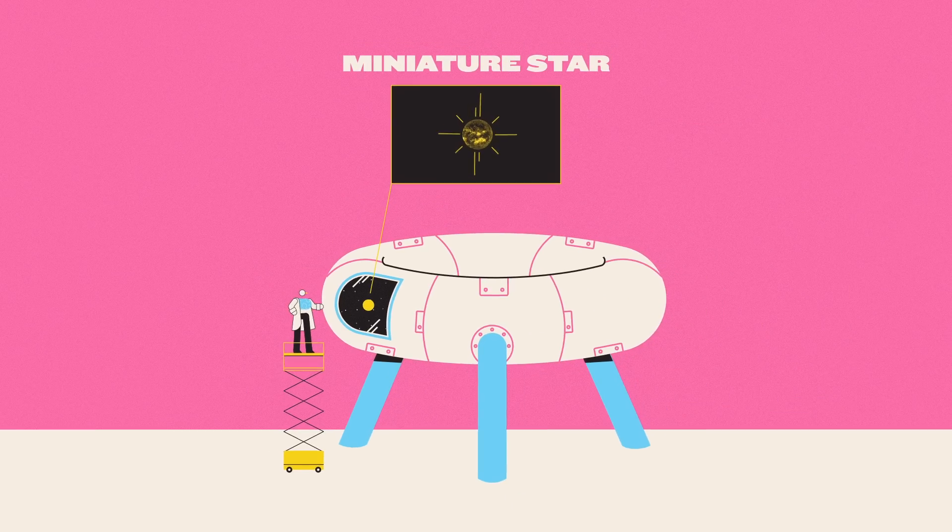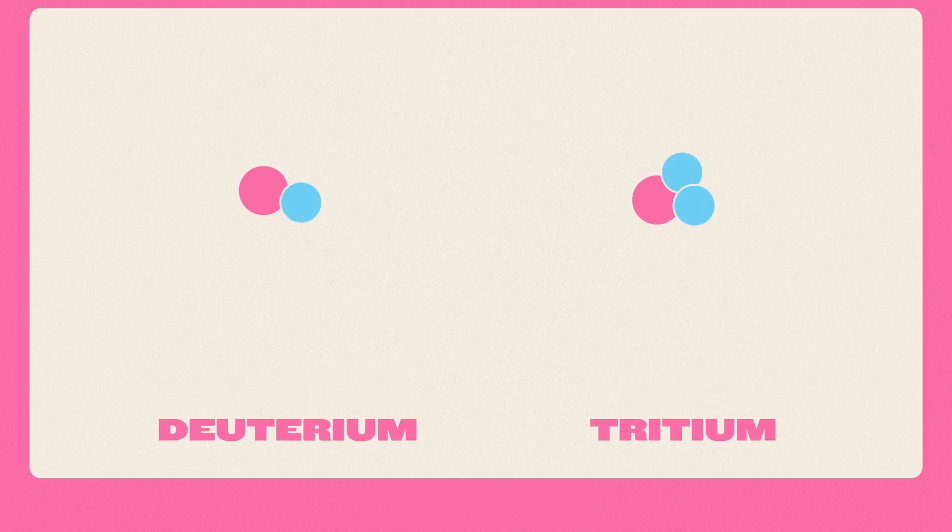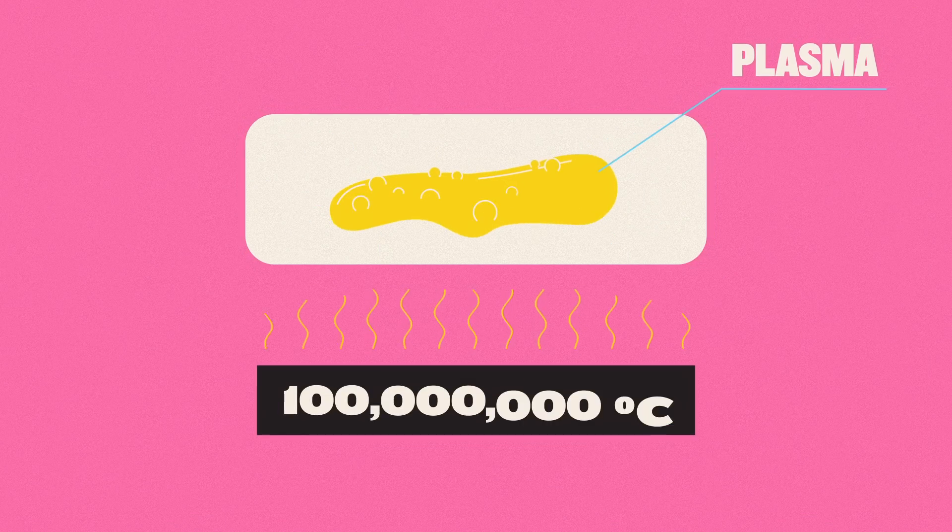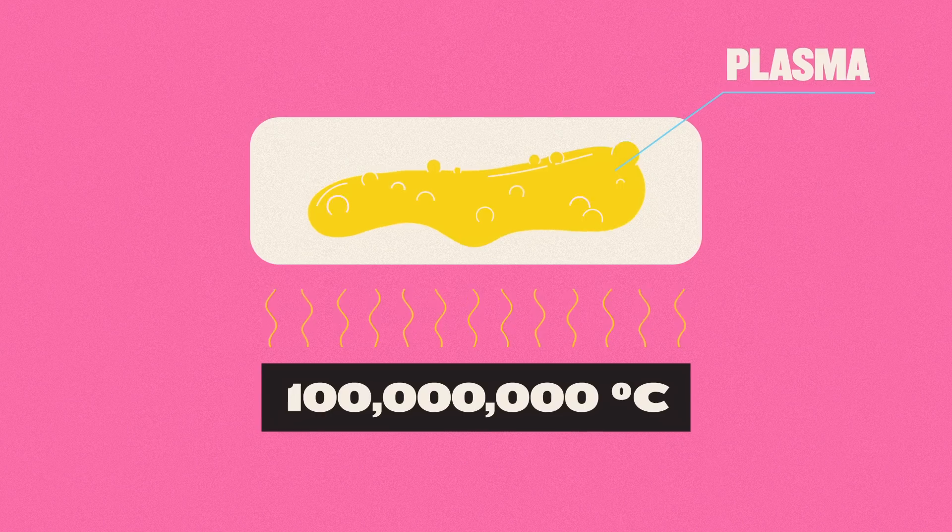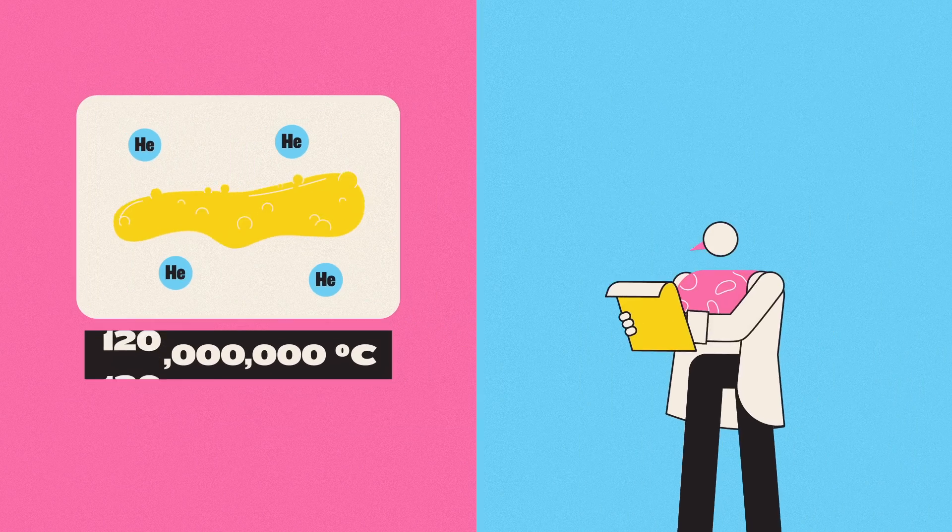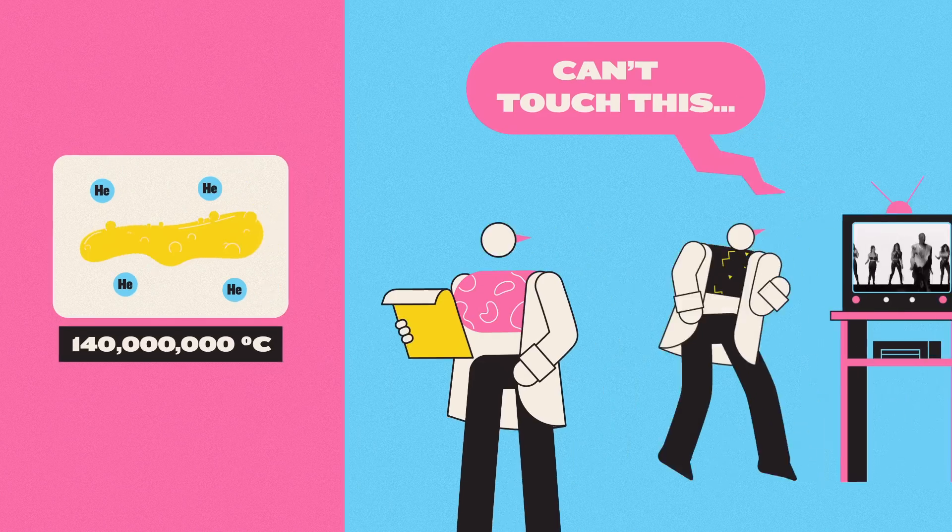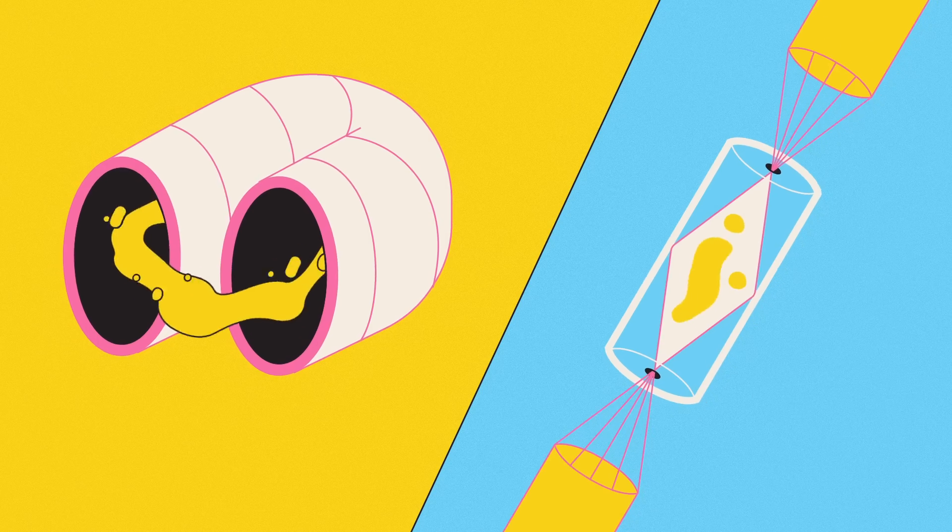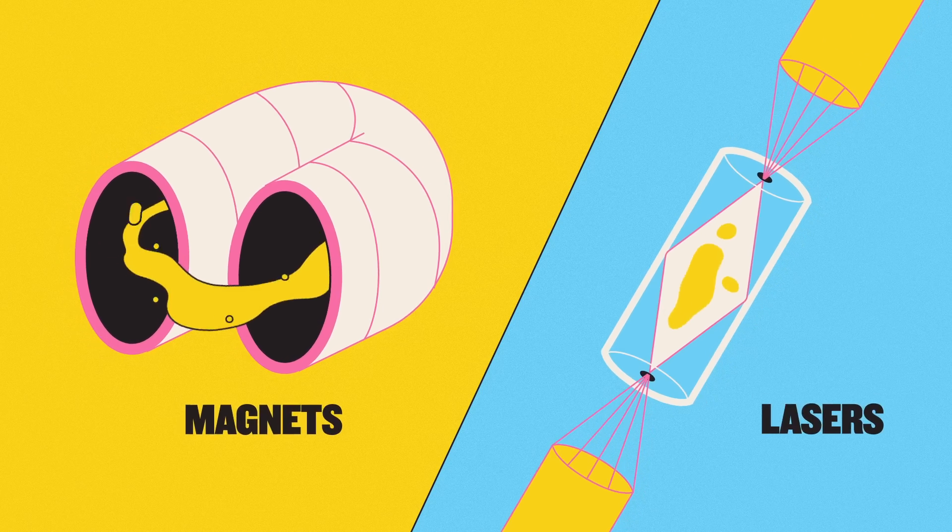To effectively create a miniature star, deuterium and tritium atoms are heated into plasma, an electrified gas at temperatures over 100 million degrees Celsius, where they form helium and give off even more heat. Because something that hot would melt anything it touches, the plasma has to be suspended in mid-air using powerful magnets or lasers.